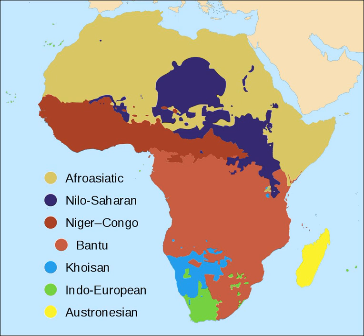The Niger-Congo languages constitute the largest language family spoken in Africa, and perhaps the world, in terms of the number of languages. One of its salient features is an elaborate noun class system with grammatical concord. A large majority of languages of this family are tonal, such as Yoruba and Igbo, Ashanti and Ewe. A major branch of Niger-Congo languages is the Bantu phylum, which has a wider speech area than the rest of the family.